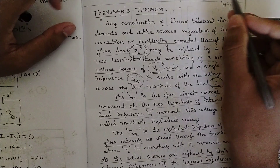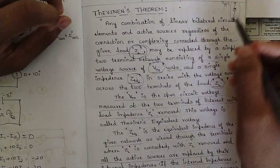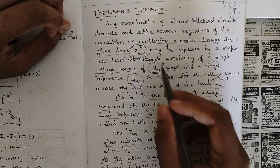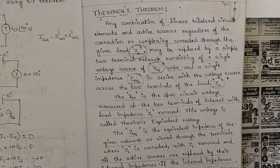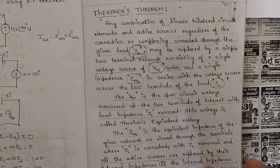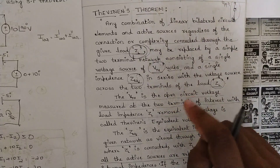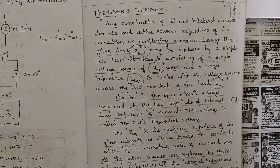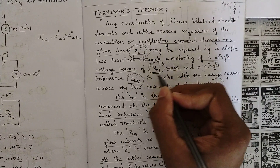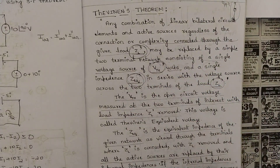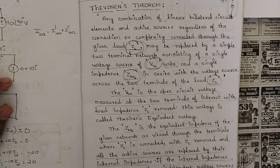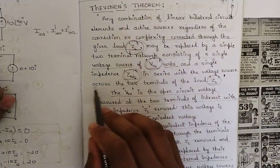Along with that load impedance we should have V_th volts and Z_equivalent in series across the two terminals of the load Z_del. That circuit is called the Thevenin equivalent circuit. The final Thevenin equivalent circuit consists of one voltage source referred to as V_th and one equivalent resistance or impedance Z_eq — that is the final Thevenin circuit we conclude from the complex circuit.